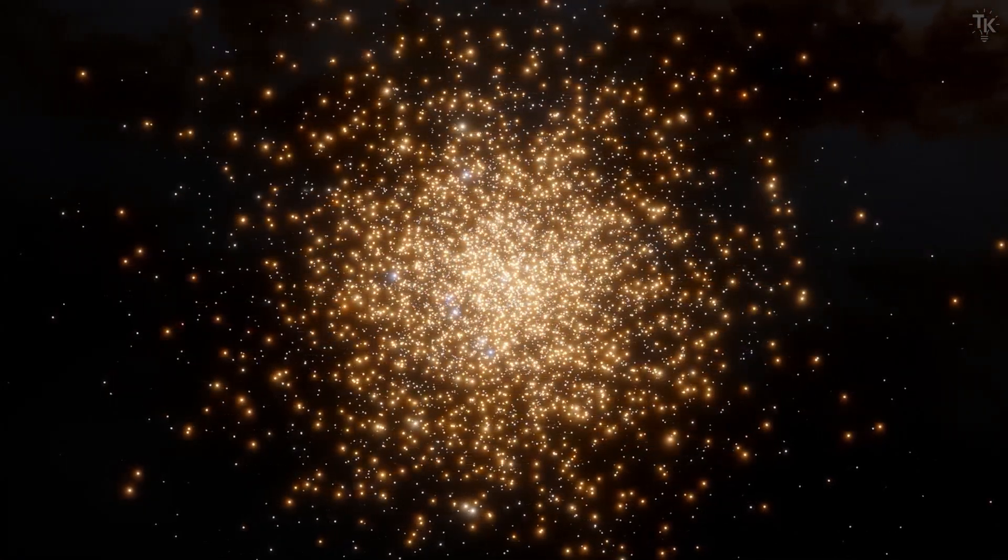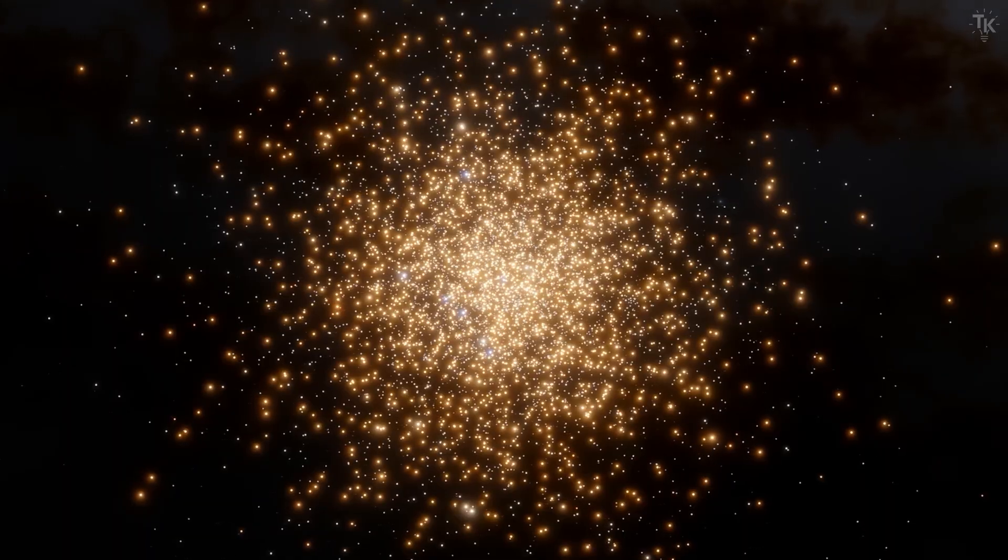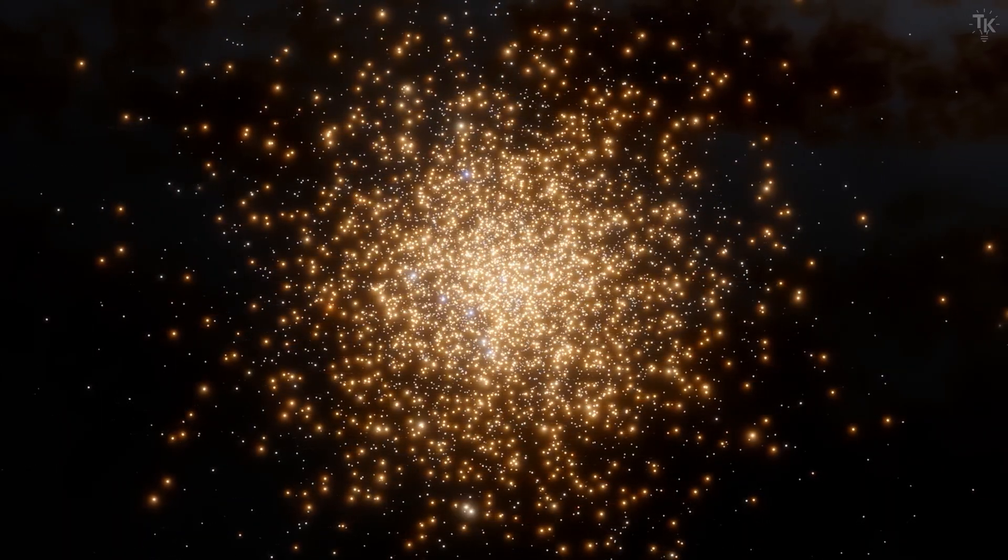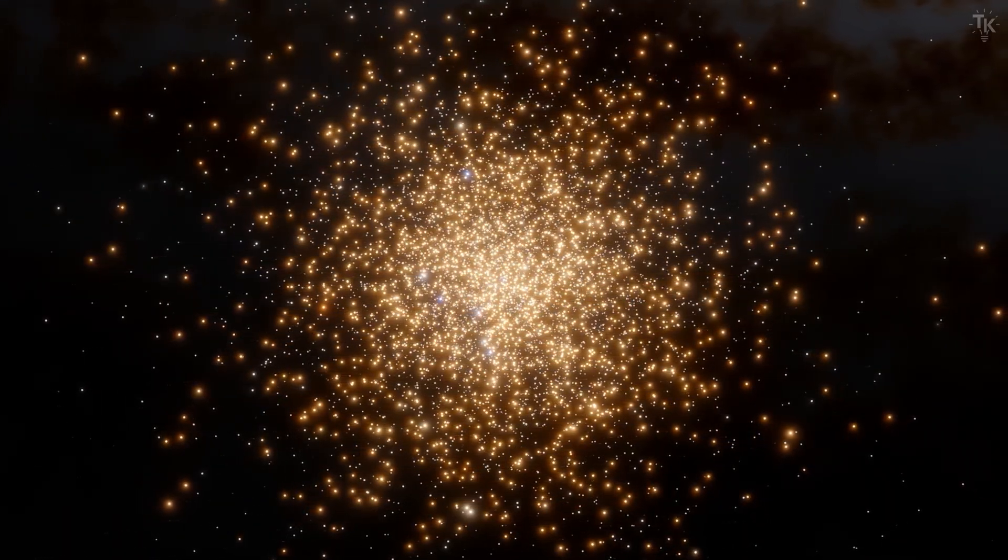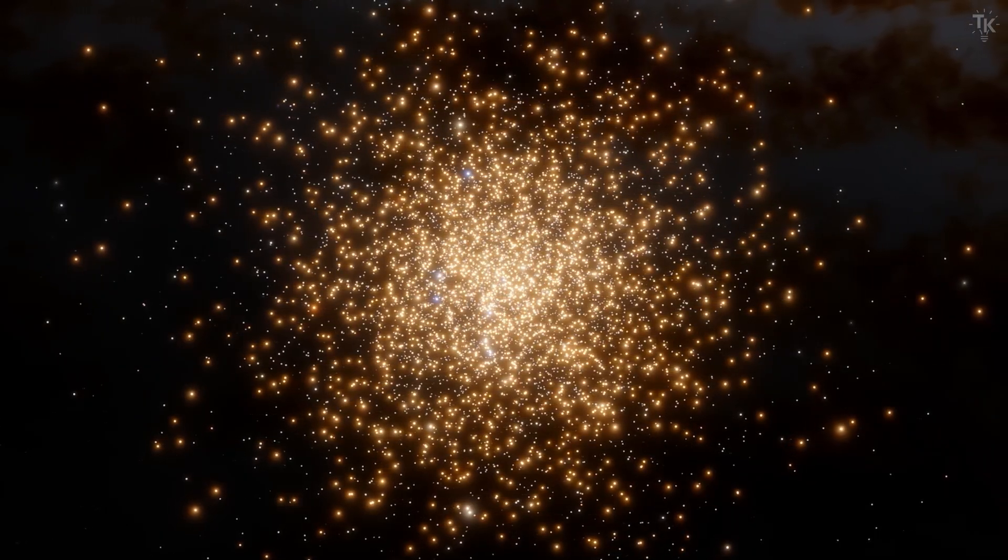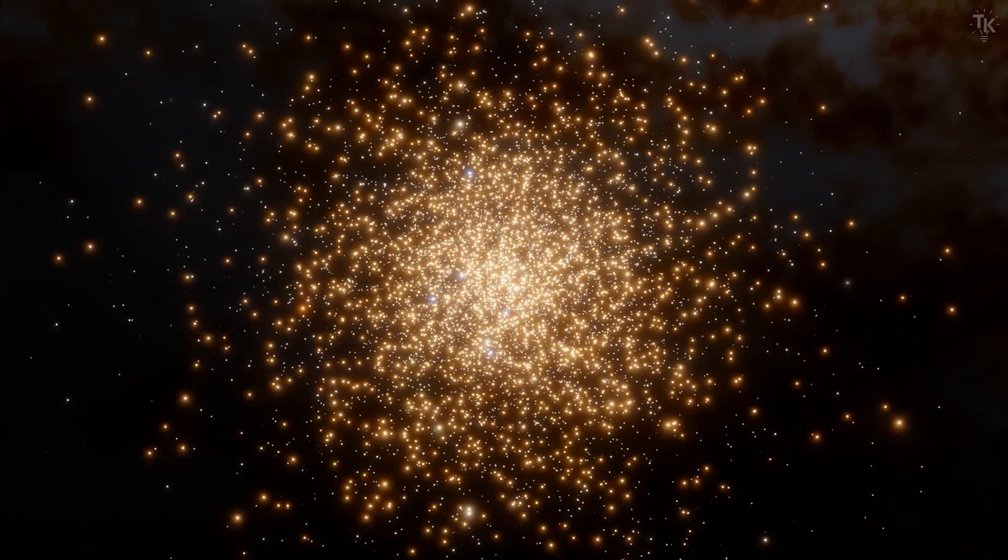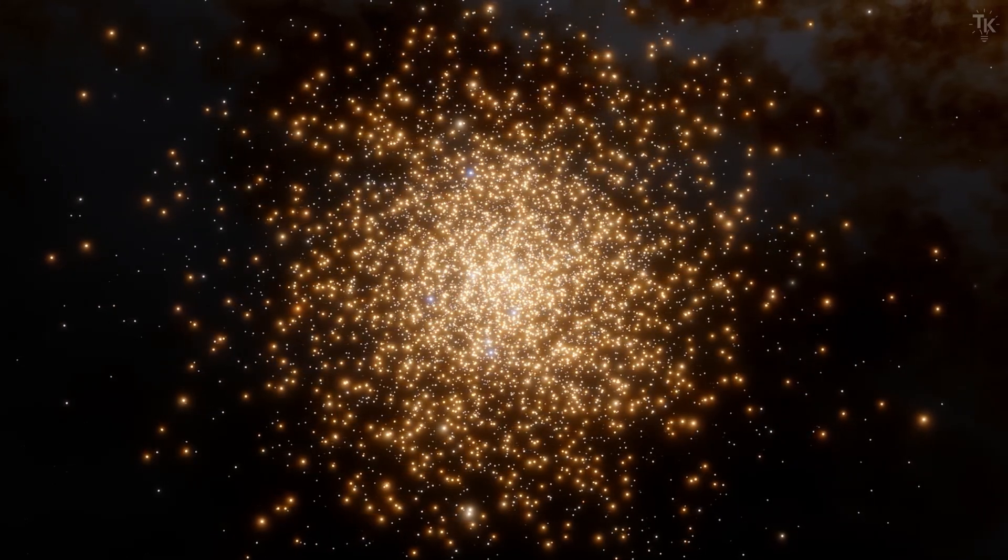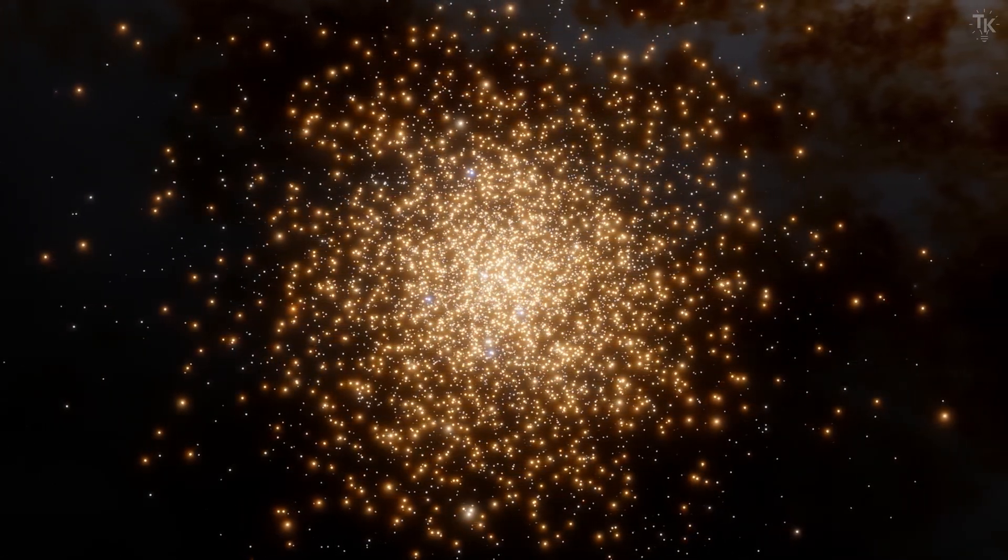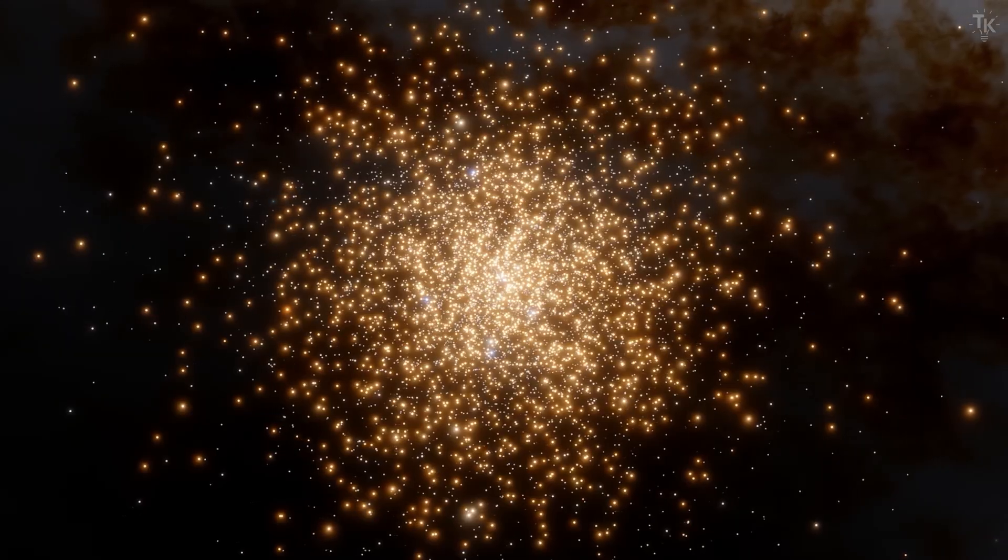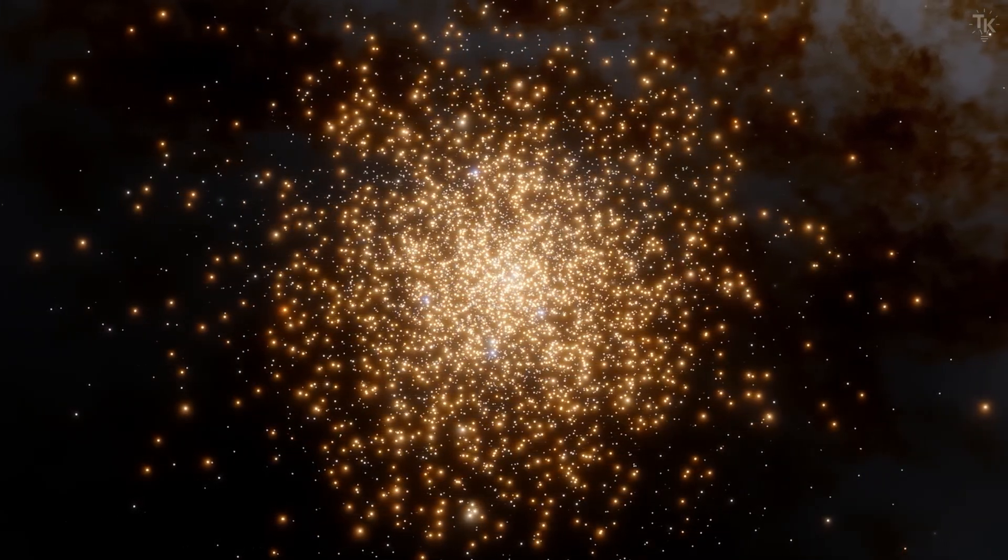Globular clusters have a mystery regarding their stellar generations. They are usually composed of only one generation of stars. This is because the massive bursts of stars that form simultaneously blow away the gas needed for the next generation, preventing further star formation. However, NGC-2808 contains at least three generations of stars.